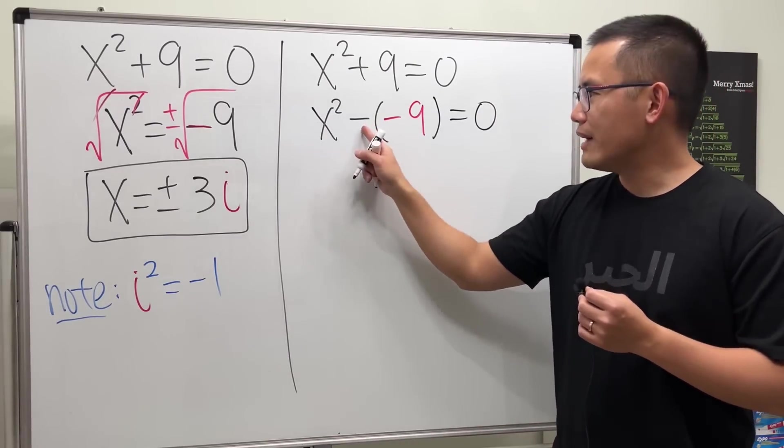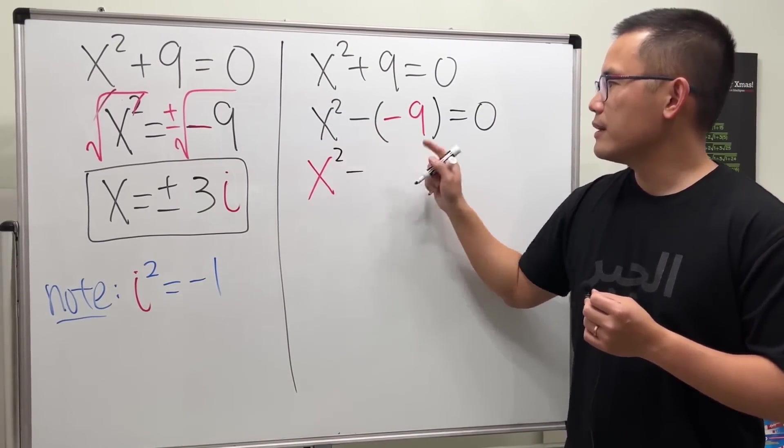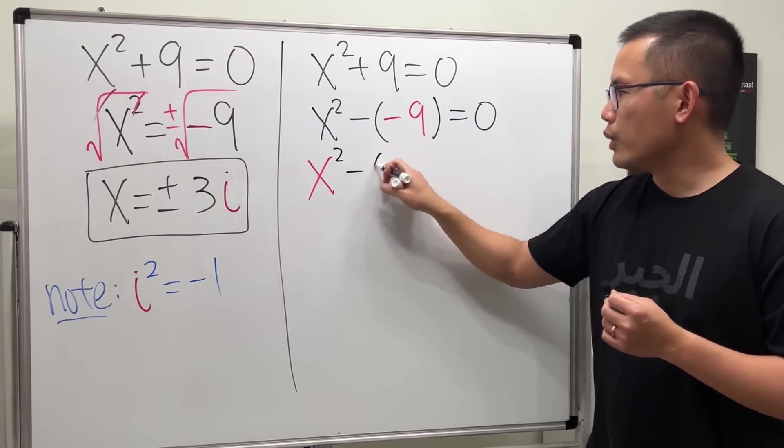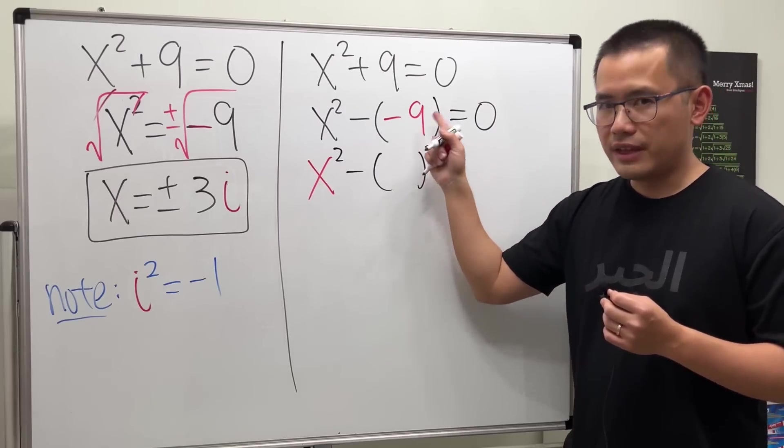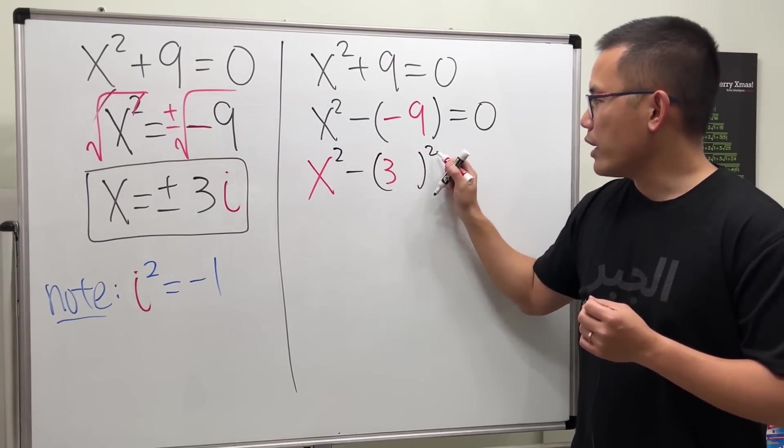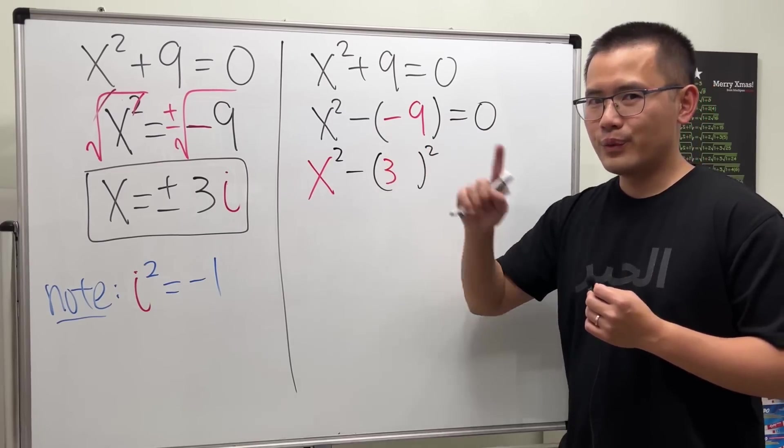Okay, we have a difference. This right here is, of course, a square, x squared. Now, the question is, what squared will give us negative 9? Well, we know 3 squared will give us 9. But how can we get a negative though?